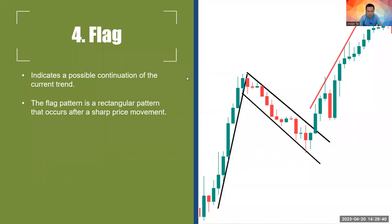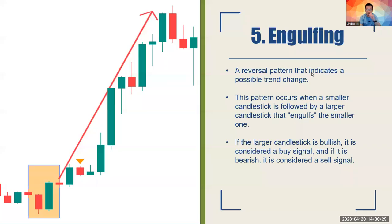Next up is the flag, which signals continuation of the current trend. It's a rectangular pattern that occurs after a sharp price movement — the sharp move acts as the flagpole and then you get a rectangular consolidation. Once price breaks out of that flag you anticipate continuation in the direction of the prior sharp move. If it breaks the other way, it's no longer a flag pattern.